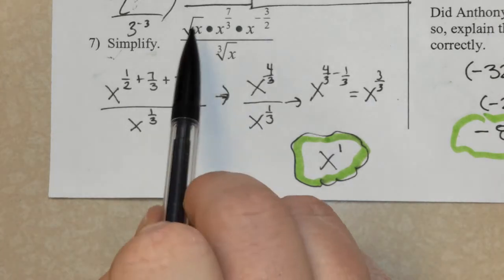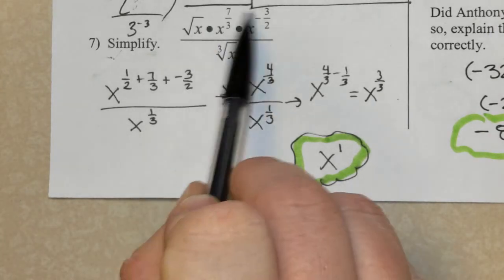In problem number 7, when you're multiplying and you have the same base, you add the exponents.